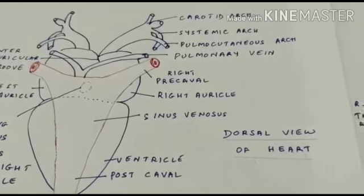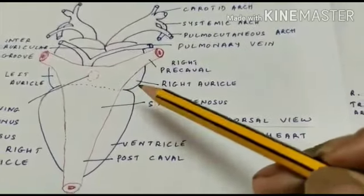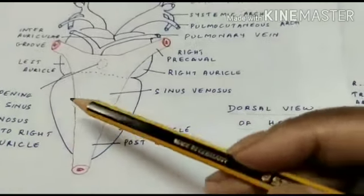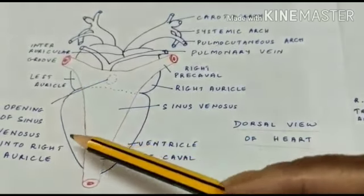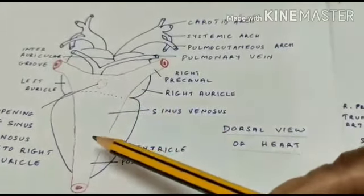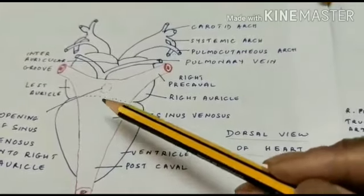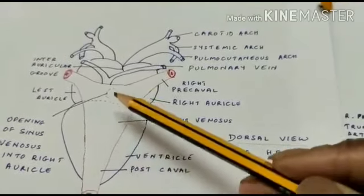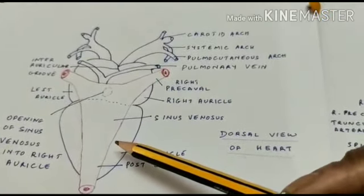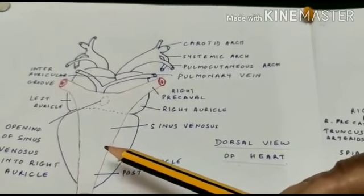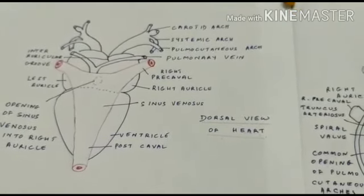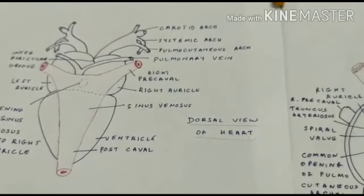The auricles then contract. The deoxygenated blood from the right auricle comes to the right side of the ventricle and the oxygenated blood from the left auricle comes into the left side of the ventricle. The middle part of the ventricle is occupied by mixed blood, as there is no septum to separate the two types. So the ventricle contains three types of blood: oxygenated, deoxygenated, and mixed blood.